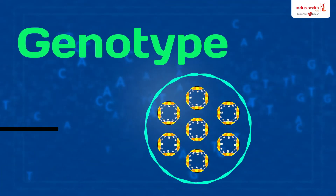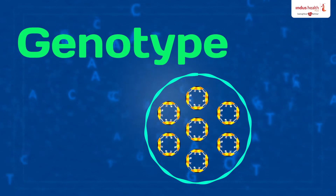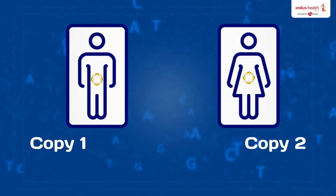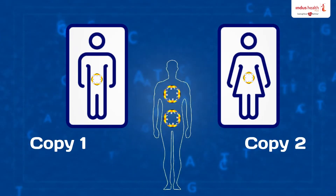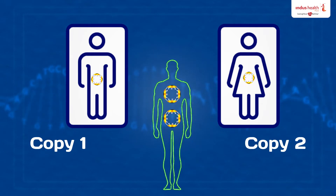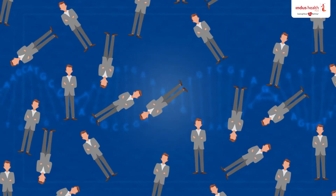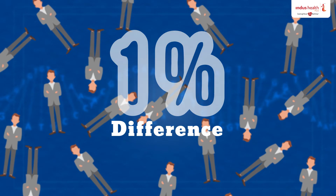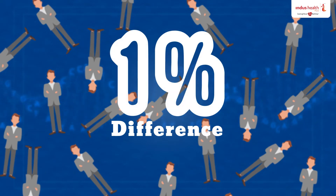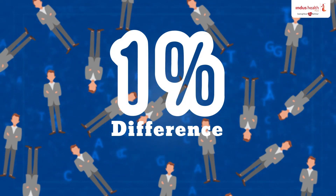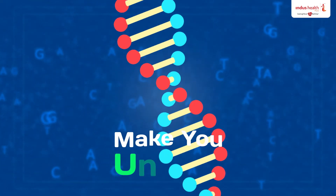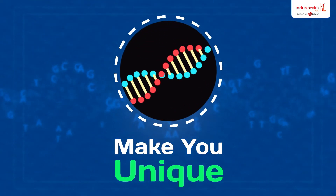A group of genes is called a genotype. Every person has two copies of each gene, one inherited from each parent. Most genes are the same in all people, but a small number of genes — less than 1% — are slightly different between people. These small differences in your genotype make you unique.